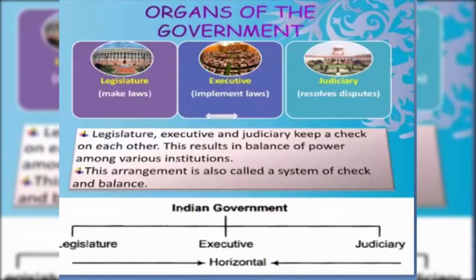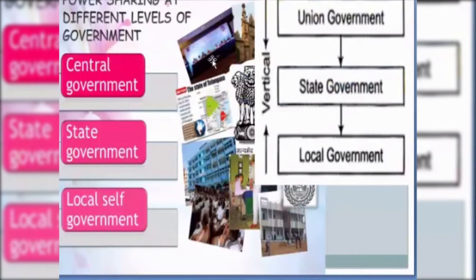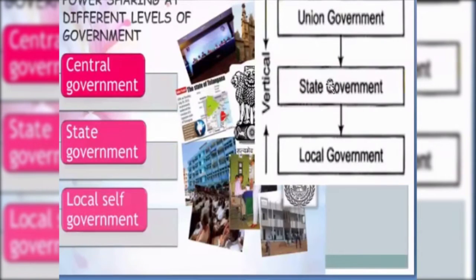The second form of power sharing is power sharing at the different levels of government. Think about a pyramid: at the top is the central government, that means the Government of India. Under the central government, there are different state governments — like the government of Maharashtra, the government of Tamil Nadu, the government of Goa. And under the state government, there is the local government, meaning the panchayat and the municipality.